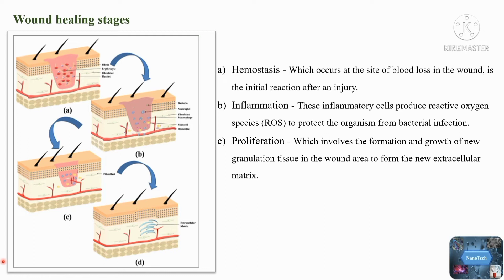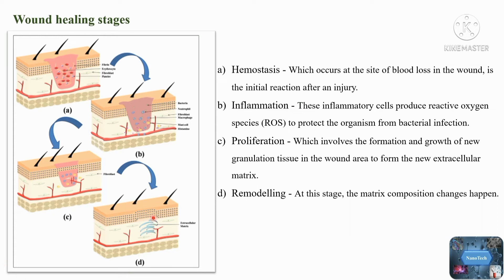The final stage of recovery is remodeling. At this stage, the matrix composition changes, with collagen 3 being replaced by collagen I, resulting in increased tensile strength of new tissues. Any interruption in any of the wound healing phases may cause each step to be delayed, resulting in an unsatisfactory outcome and the development of a chronic wound.